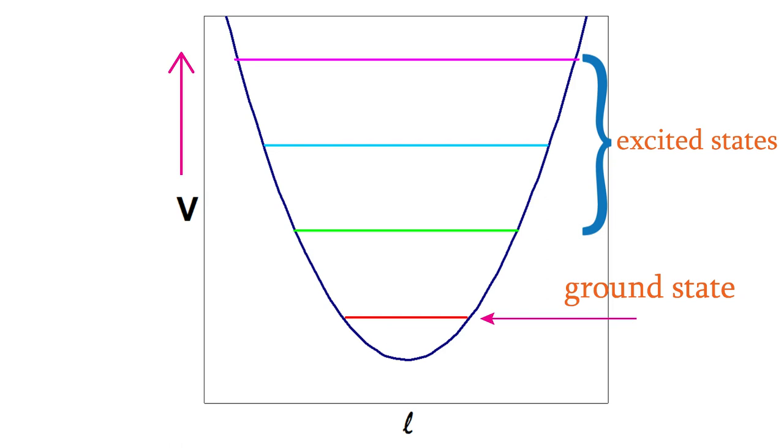But wait, notice that the v equals zero level is not at the very bottom of the curve. The curve represents the potential energy predicted by classical physics for the various possible bond lengths. According to classical physics, the potential energy should be a minimum at the equilibrium bond length, but quantum mechanics tells us that the energy will actually never have that minimum value, because the potential energy when v equals zero is the lowest energy possible. The energy of the v equals zero state is sometimes called the zero point energy.